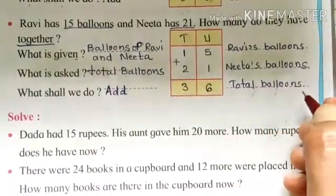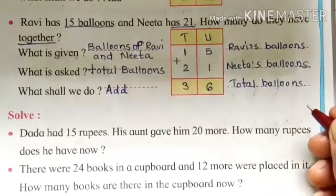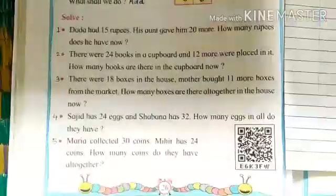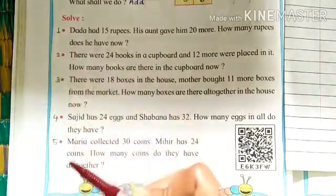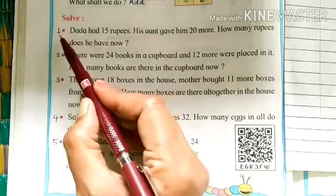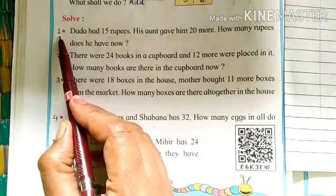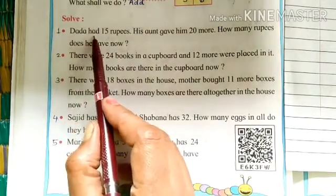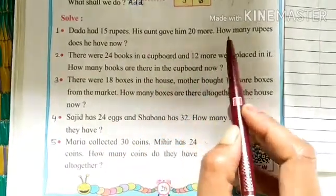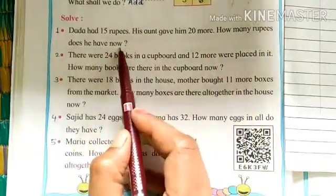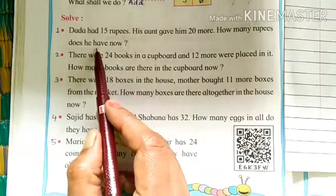So in this way we have got the final answer. And in this way only, we have to solve other remaining examples. Next is a question to solve. There are 5 questions. So put there number 1, 2, 3, 4 and 5. Number 1, I will explain it to you. Dada had 15 rupees. His aunt gave him 20 more. How many rupees does he have now? Now this question, how to write in notebook and solve, that I will show you.